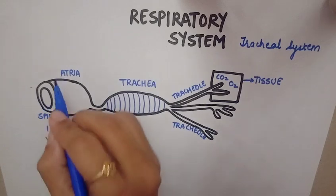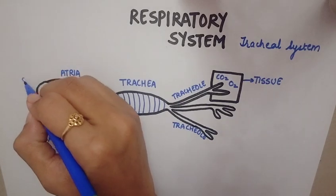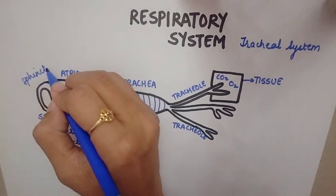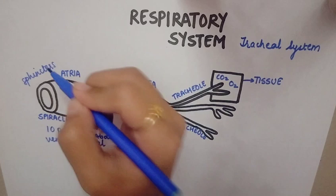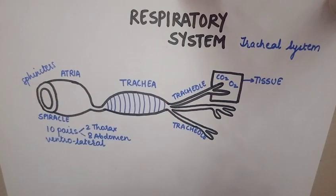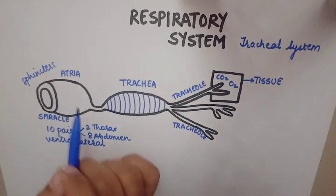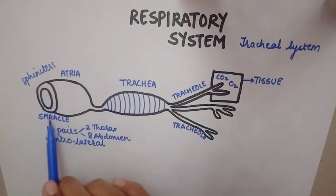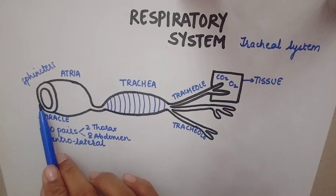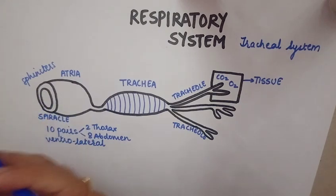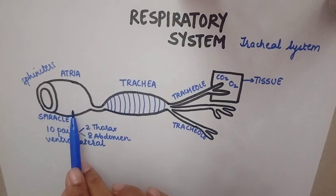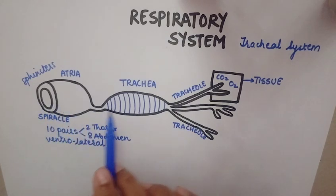Now these spiracles have certain sphincters present to regulate the exchange of gases. The air from the surrounding will enter through the spiracles into the body of the cockroach.